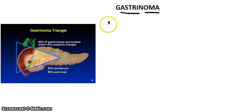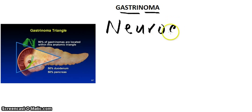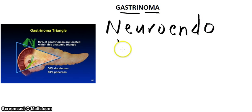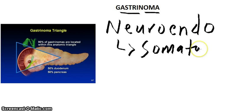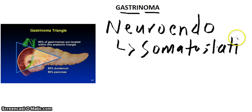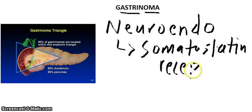The next thing to remember is that they are neuroendocrine tumors. Most neuroendocrine tumors contain somatostatin receptors, and that is really important for diagnosis and location of these tumors, which we will mention later in the lecture.